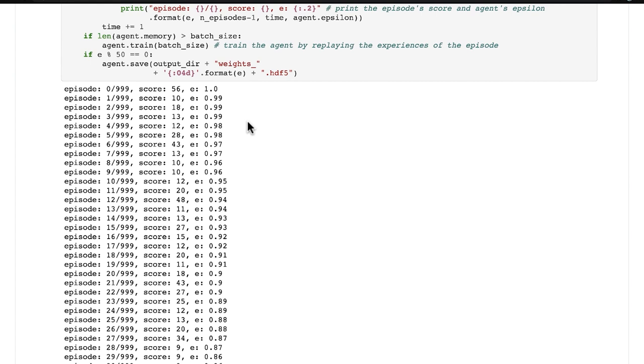In this case, we are training an algorithm to play a video game, and the highest possible score in the video game is 200. At the beginning, before this algorithm has learned how to play the video game, it's not very good. It doesn't get anywhere near that top score of 200.